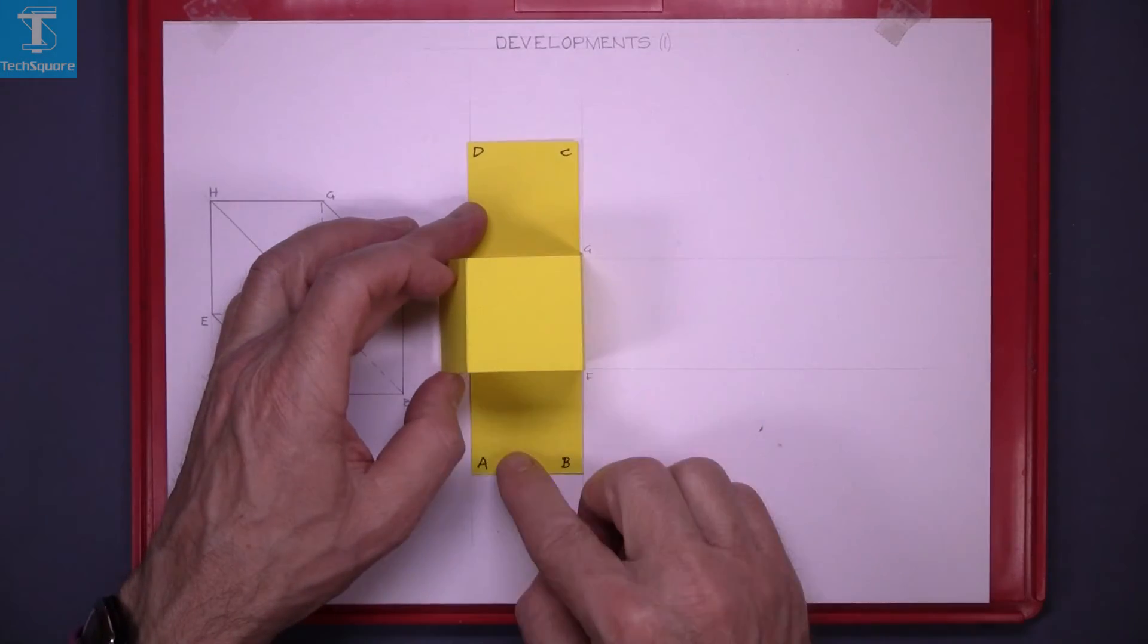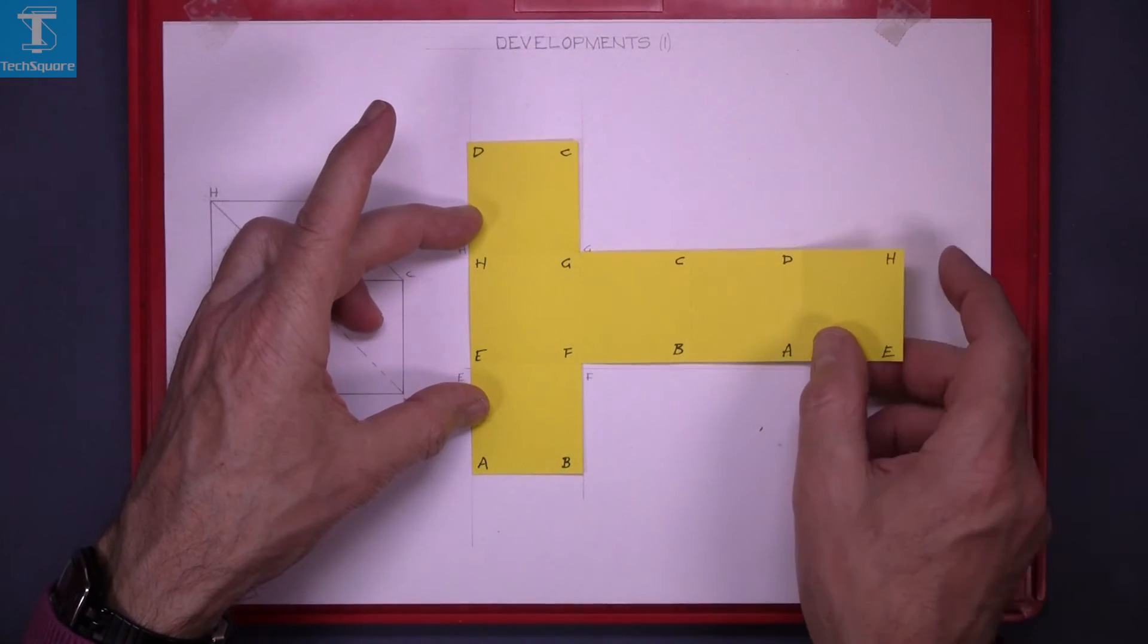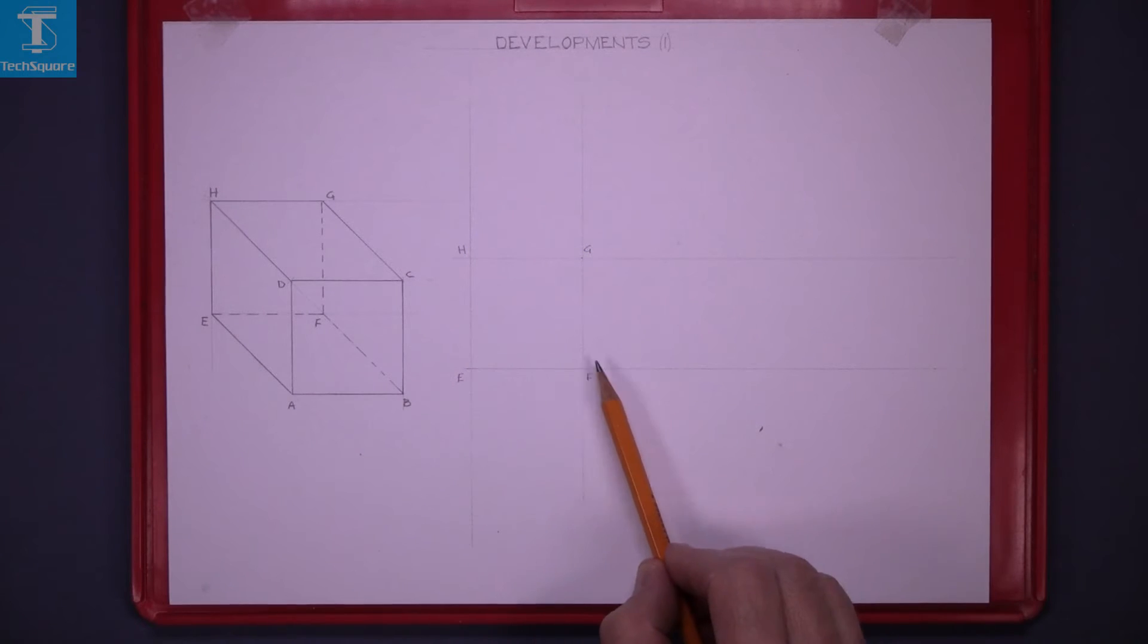We're going to fold up the top and fold down the bottom and roll across these three sides. There's four surfaces in total along here.